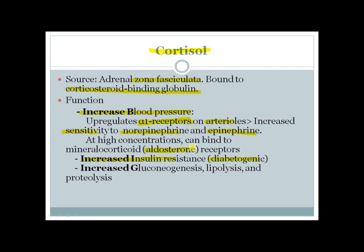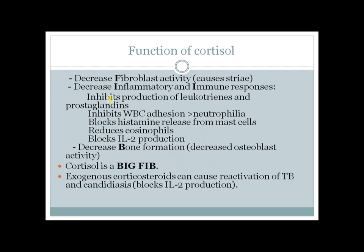Cortisol causes hyperglycemia by increasing gluconeogenesis — it increases synthesis of gluconeogenic enzymes in the liver. It also causes lipolysis and proteolysis in peripheral tissues like muscle, but not in the liver. Cortisol decreases fibroblast activity, which can lead to formation of abdominal striae because the abdominal wall develops thinner skin under internal pressure.